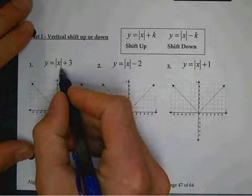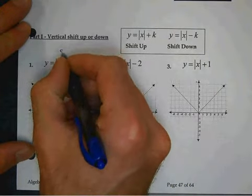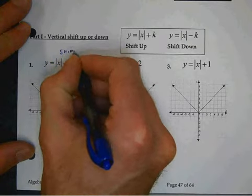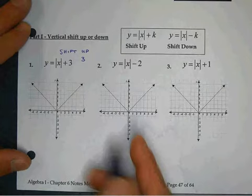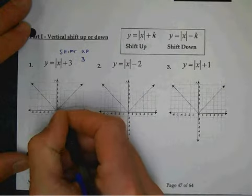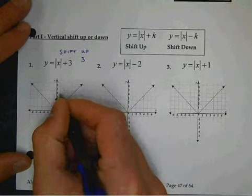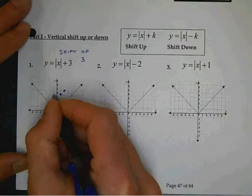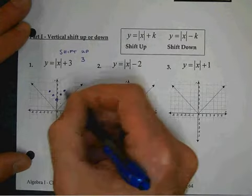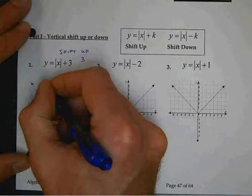So, what we do, since it says it's adding 3, this is a shift up by 3. So, we're going to take each of our points, and we're going to go up 3. So, 1, 2, 3, put a dot. 1, 2, 3, put a dot. 1, 2, 3, put a dot. Shift that one up 3, and that one up 3. And that is your real function shifted up by 3.